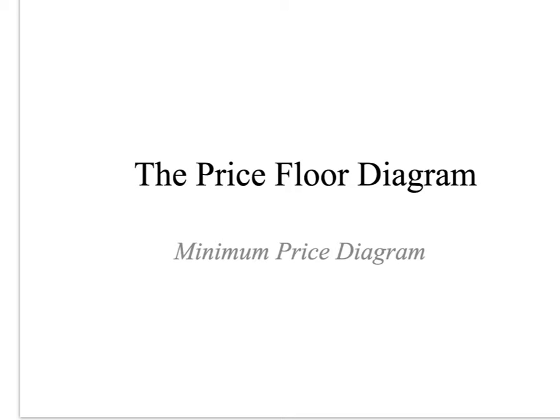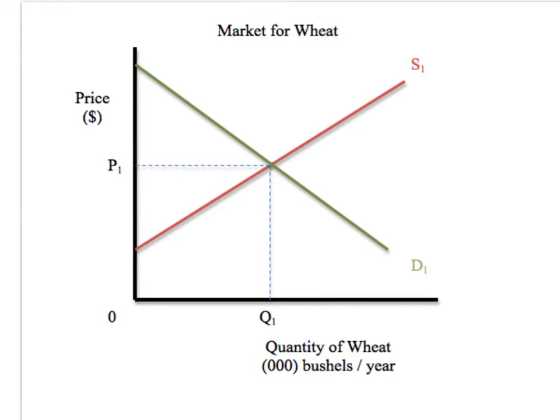Before we look at the price floor diagram for the wheat market, the Rule of 11 — it's the most important aspect to make sure you have effective analysis and evaluation. Rule of 11: count all 11 components up.